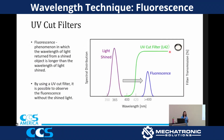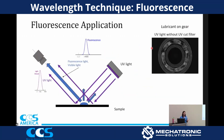It's a phenomenon in which a wavelength of light returned from the shined object is longer than the wavelength of the shined object. Long story short, I have my sample. There's some property of my sample that when 365 nanometers hits it, it gets excited and reflects off at about 400 nanometers. It is hit with 365, reflects off higher, more than 400. So we can utilize that to create contrast in our images.